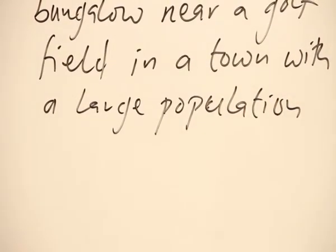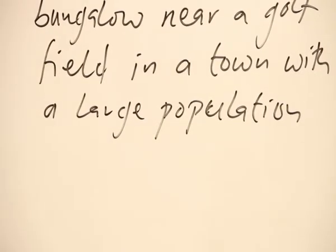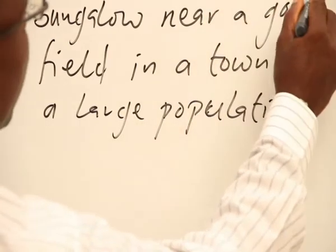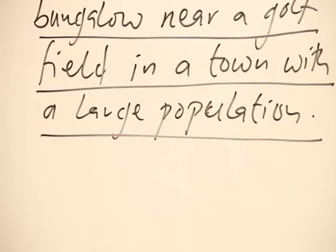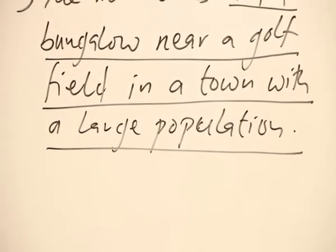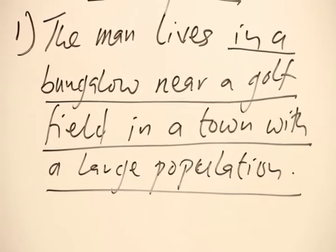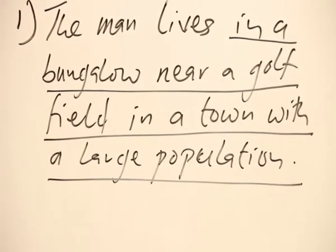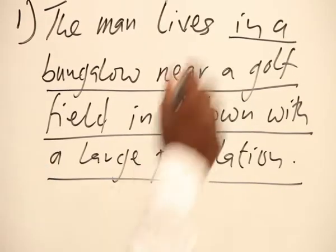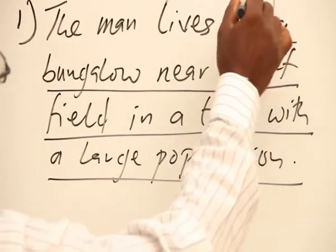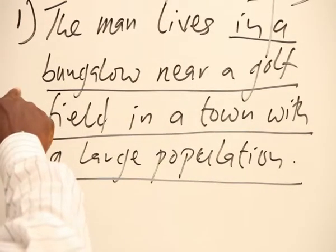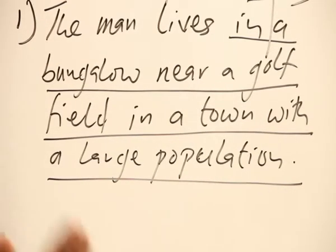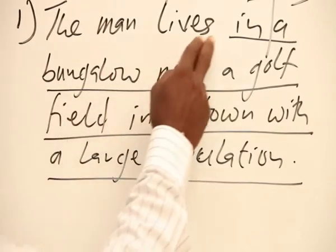Now we can begin to isolate the first prepositional phrase. The first prepositional phrase runs all the way down to the end: in a bungalow near a golf field in a town with a large population. So this is a complex prepositional phrase, and the first prepositional phrase extends from the beginning to the end.